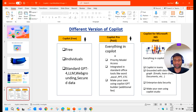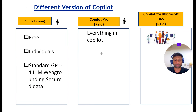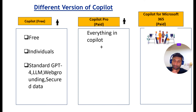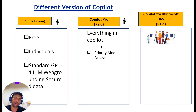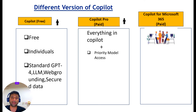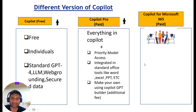Now we move to the second version, which is Copilot Pro. In Copilot Pro you get everything that is in the free version, plus you get priority model access. Priority model means you get priority when using Copilot — when there is heavy traffic, Copilot Pro users get first priority. It is a paid version and it is integrated in standard Office tools like Word, Excel, PowerPoint and more.